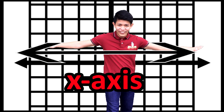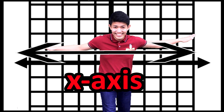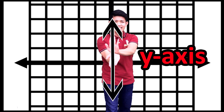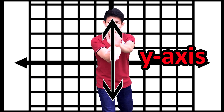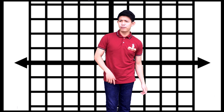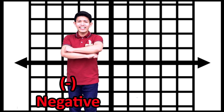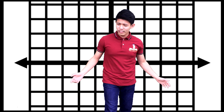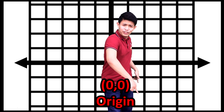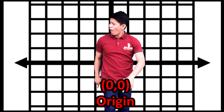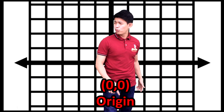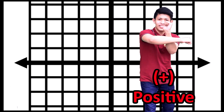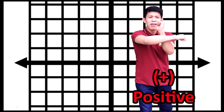The horizontal line is what we call the X-axis, while the vertical line is what we call the Y-axis. If I will move to the left, that's negative. This one is what we call the origin. Move to the right, that's positive.